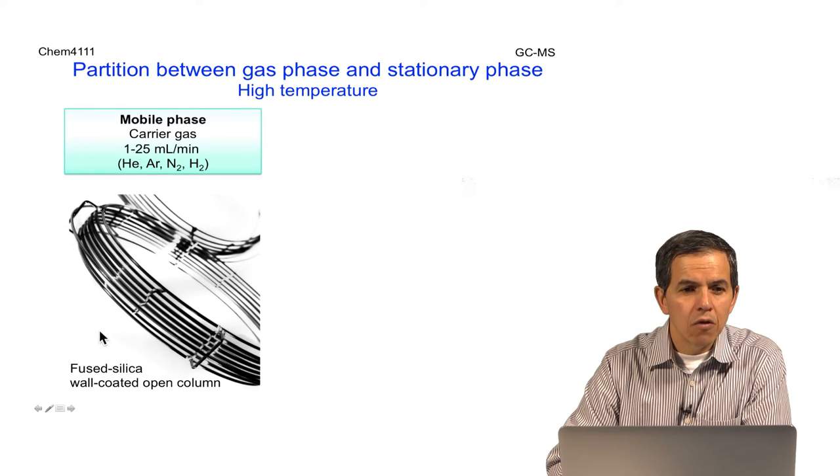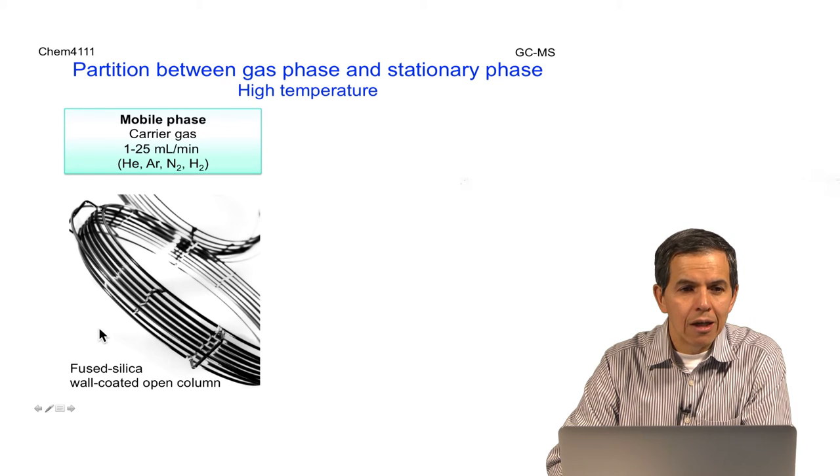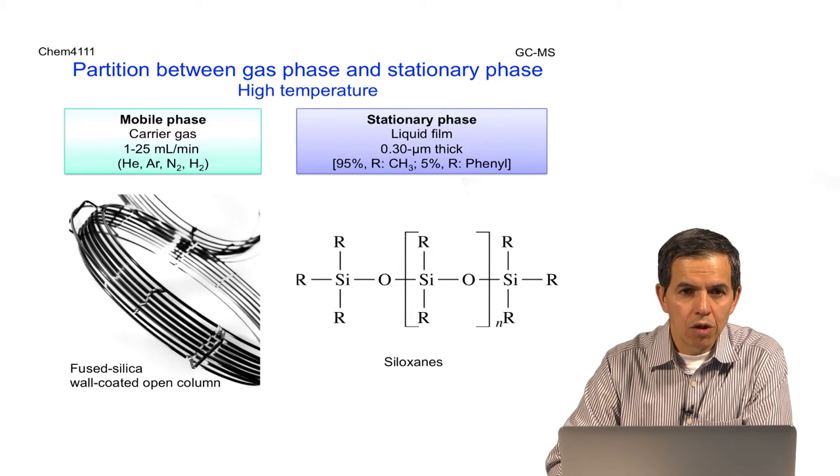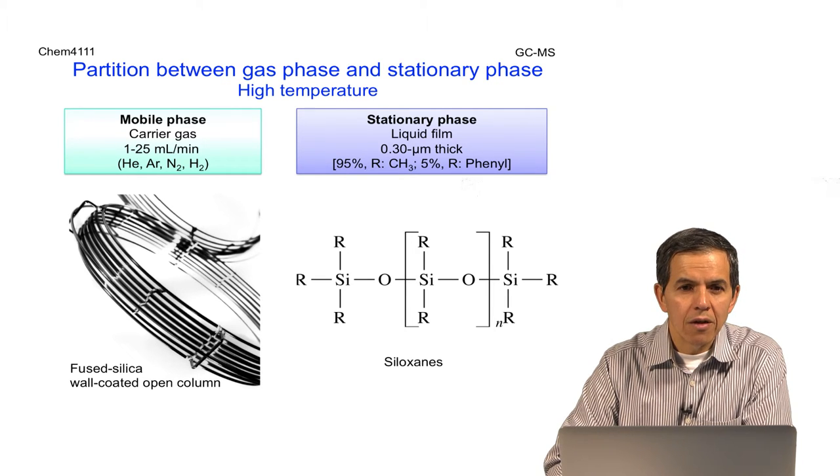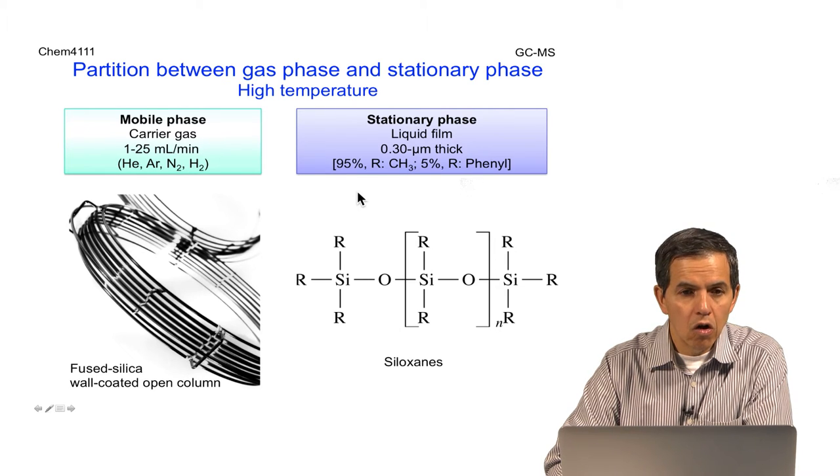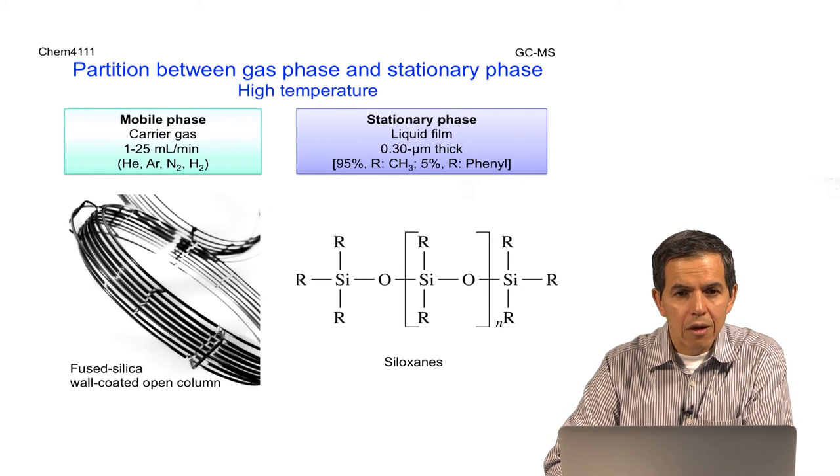The column is made out of fused silica, is open, and right in the inner wall there is the second component, which is the stationary phase. The stationary phase is usually polymeric in nature, but still in liquid form. This thin layer that coats the inner component of the column provides the ability to partition compounds between the gas phase and the stationary phase of the column.